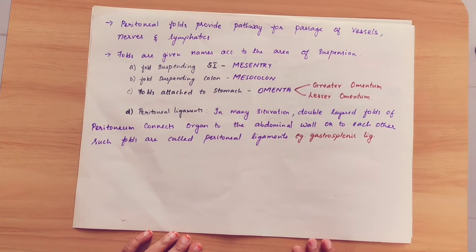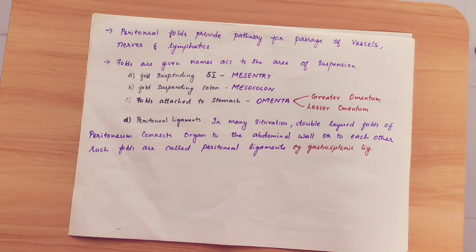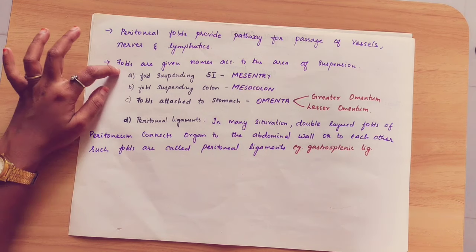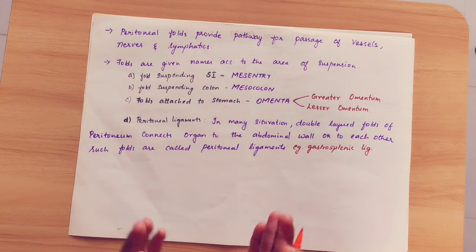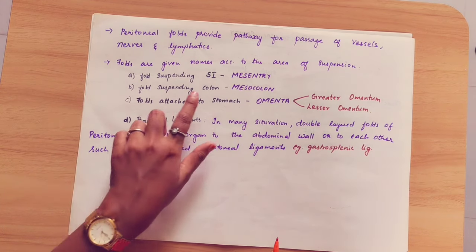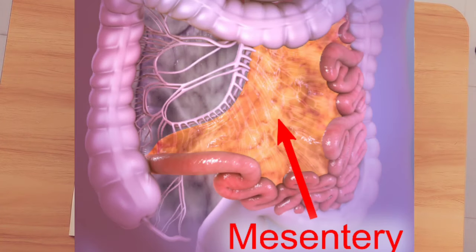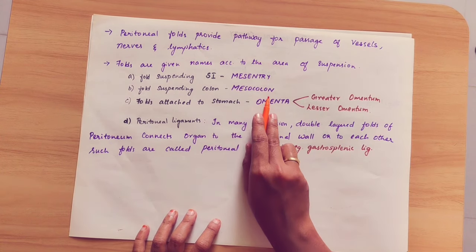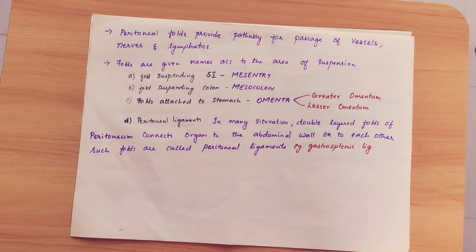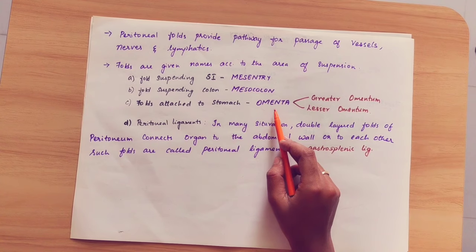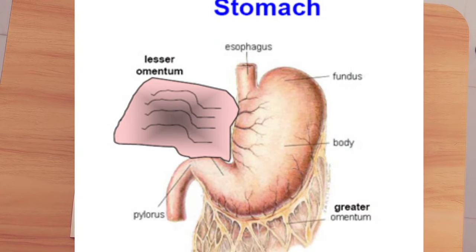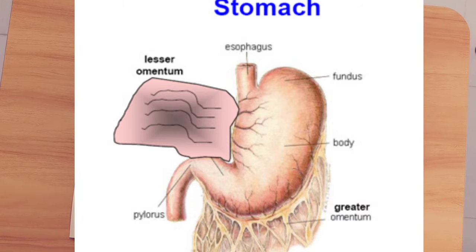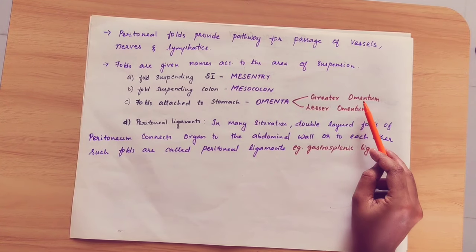The fold of peritoneum allows the passage of vessels, nerves, and lymphatics — arteries, veins, nerves, and lymphatic vessels all travel through it. Folds are given names according to the organ they suspend. For example, the fold suspending the small intestine is called the mesentery. The colon's fold is called the mesocolon. For the stomach there is a double-layer fold called omenta: the lesser omentum attaches at the lesser curvature and the greater omentum at the greater curvature.